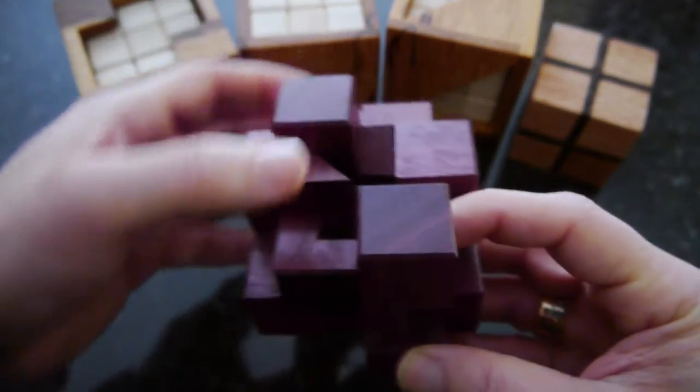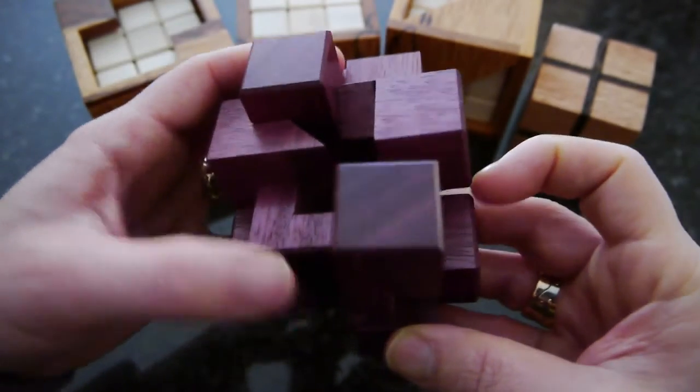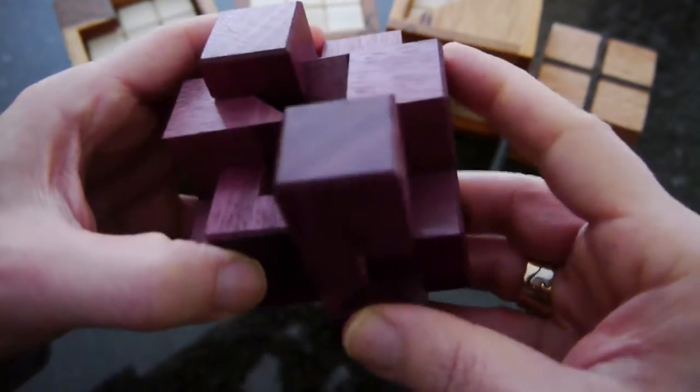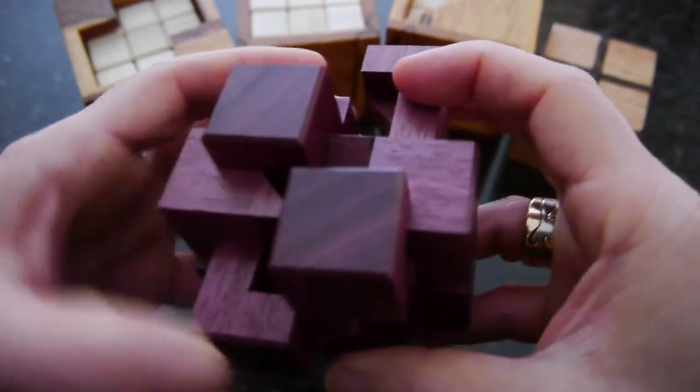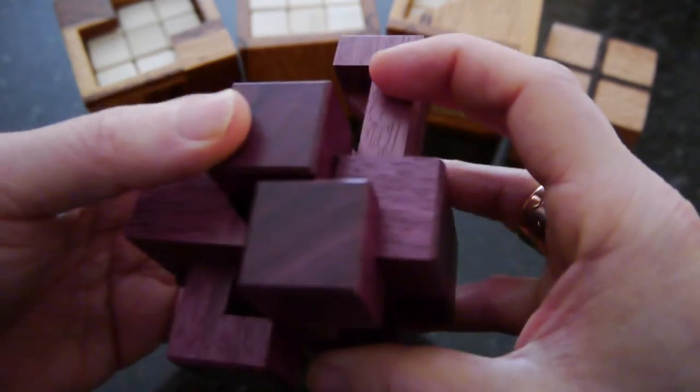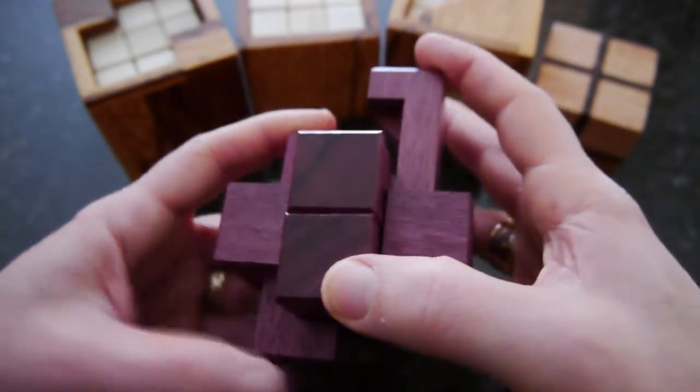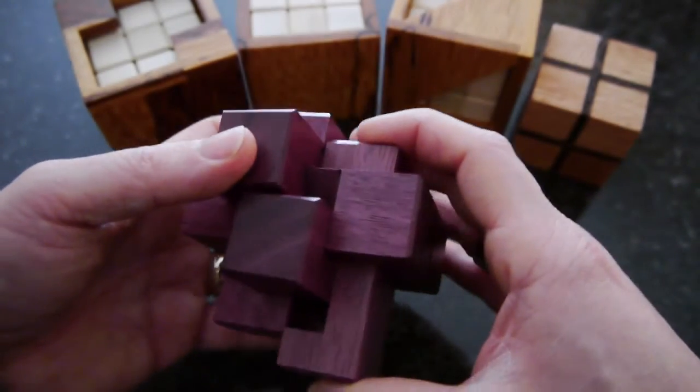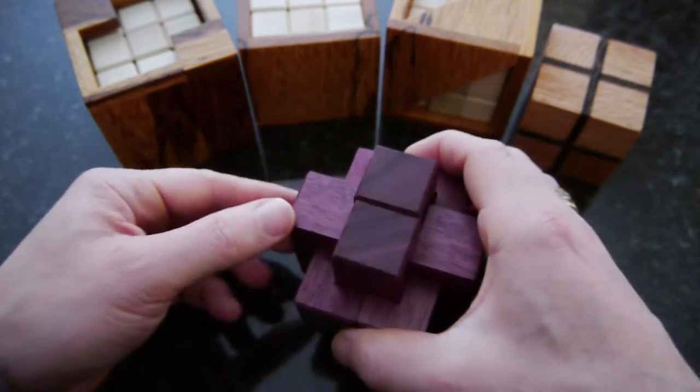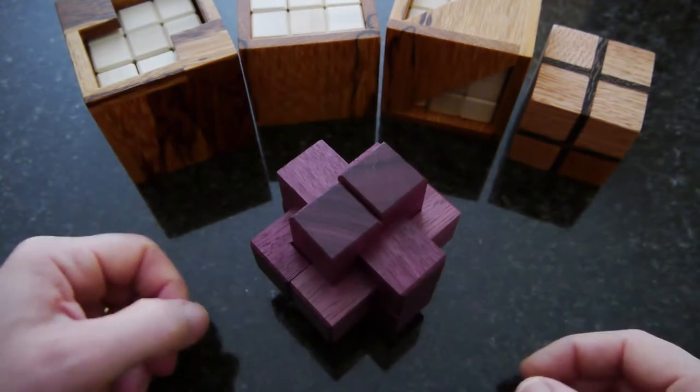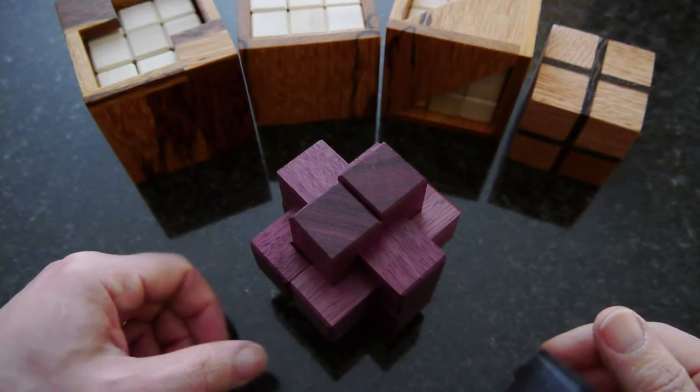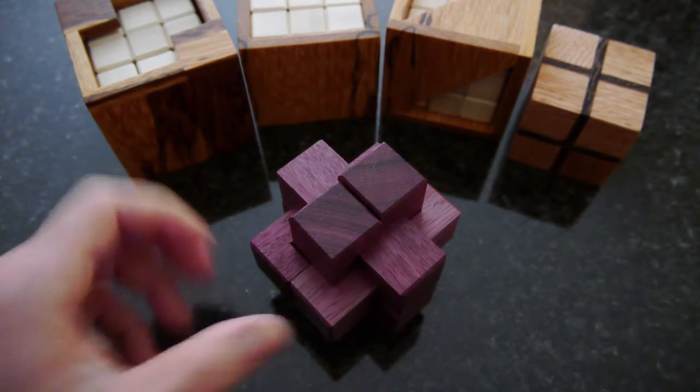Once you've got it sliding together properly then that should slide forward, that will free that to capture this one and then put that back together. There you have the new old school number five Crenel. Absolutely fabulous puzzle.